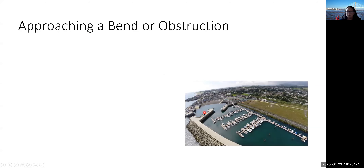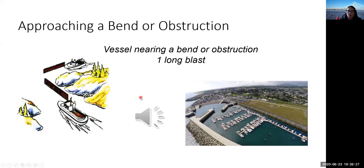When we approach a bend or an obstruction — like this example at Grouts Harbour — we sound one long blast: effectively we're saying 'hello.' We'd expect to hear another vessel pop 'hello' back. If we sound one long blast and hear nothing, we can assume there's nothing around the corner. So: short blasts for maneuvering, and one long blast when approaching a bend or obstruction.